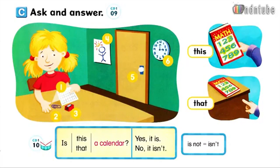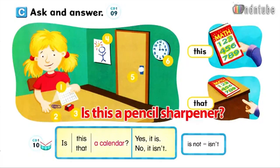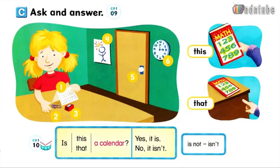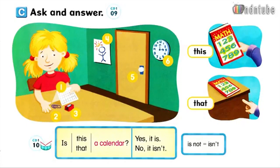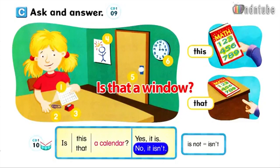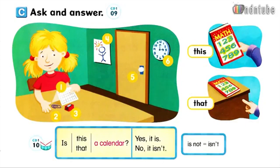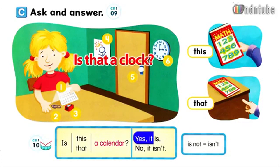Is this a pencil sharpener? Yes, it is. Number 4: Is that a picture? Yes, it is. Number 5: Is that a window? No, it isn't. Number 6: Is that a clock? Yes, it is.